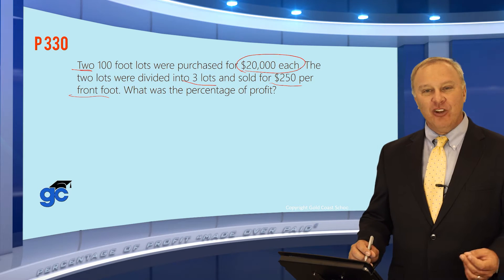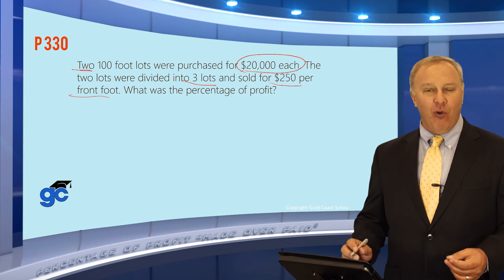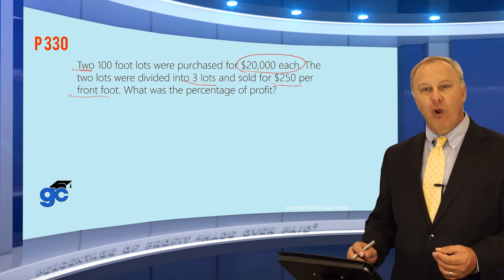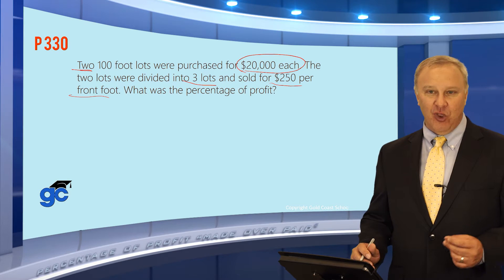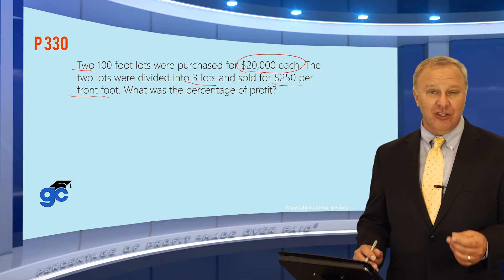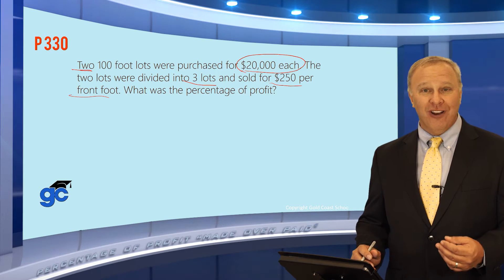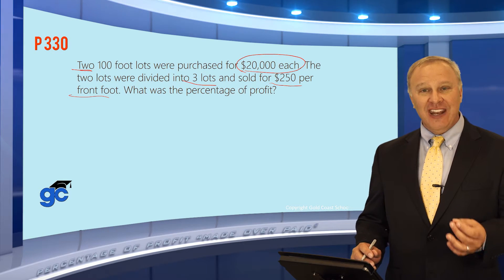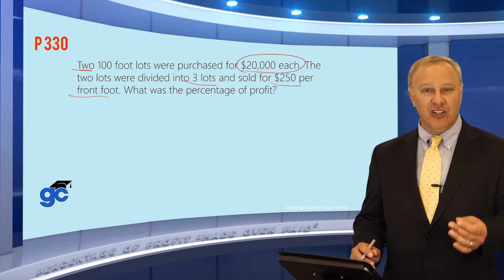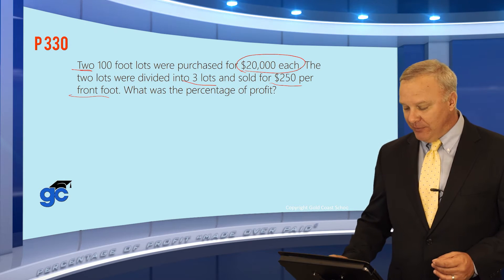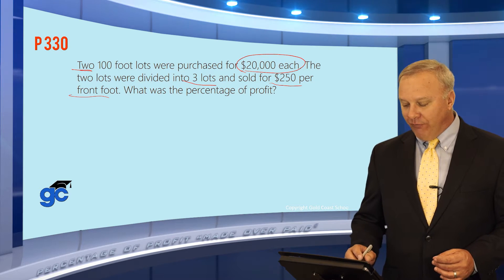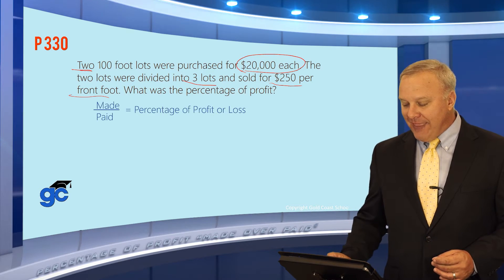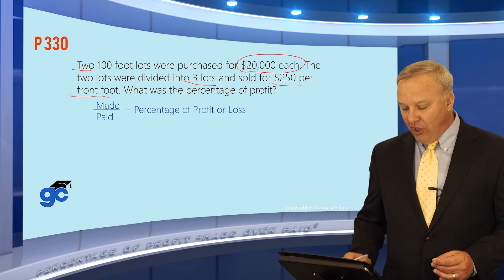Keep in mind, the percentage of profit is always a percentage of what was paid for the property, not what the property sold for. Obviously, you need to know what it sold for to calculate it, but the percentage is always a percentage of what was paid. We use the formula made over paid, and that equals the percentage of profit or loss.